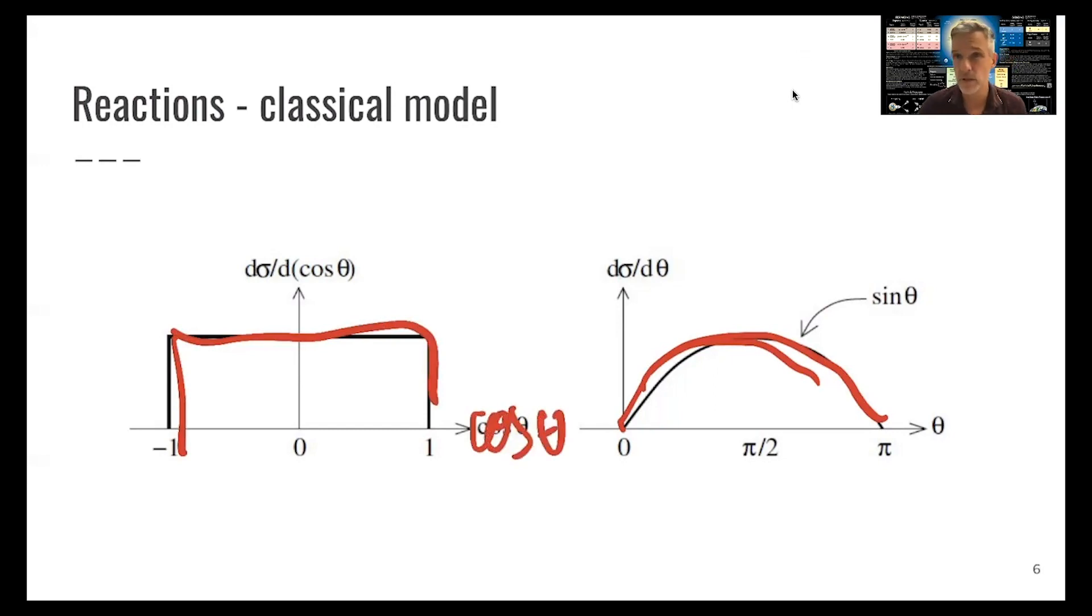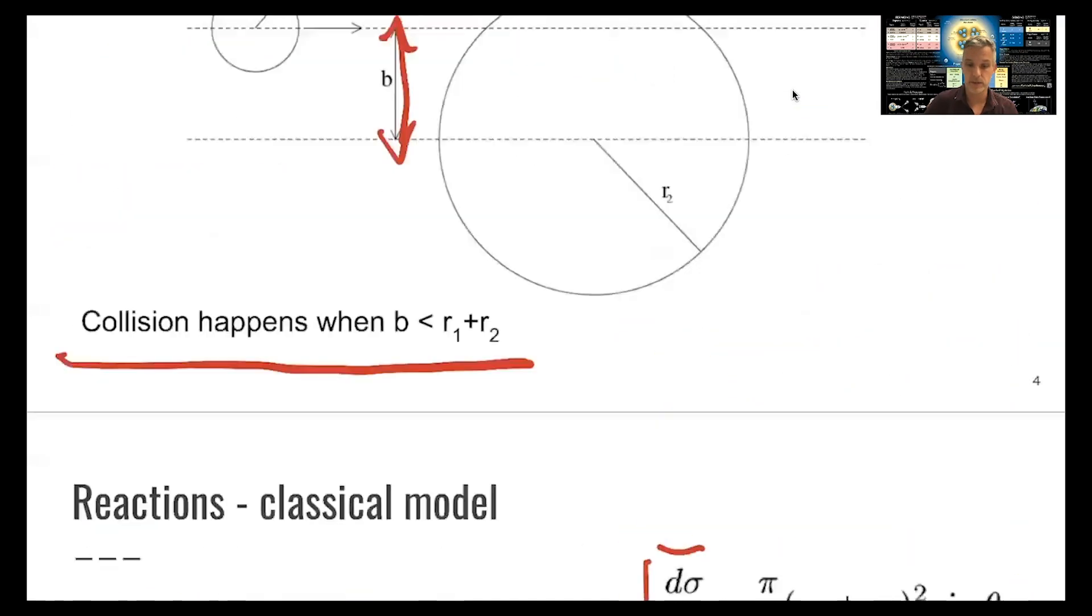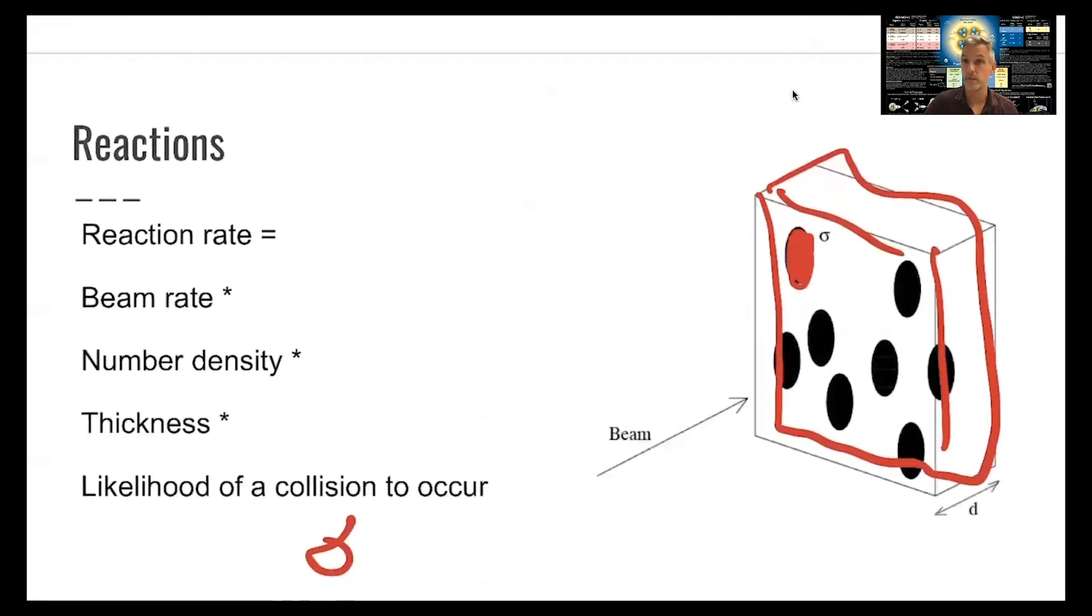So this is just a classical picture. And what we're going to do later in the class is using quantum field theory and Feynman rules in order to calculate cross sections, also decay rates. But this classical picture is really something I would like you to keep in mind.